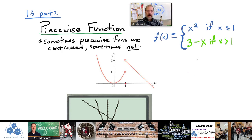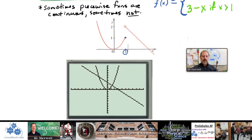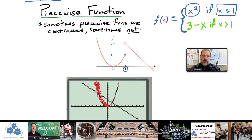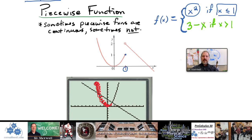Let me refresh your memory. x² is what the graph looks like on the part of the domain when x is less than or equal to 1. At x = 1 there's a filled-in dot, and everywhere to the left it looks like y = x². On the graphing calculator you can see y = x² with its vertex at zero. The specified domain is just less than or equal to 1, so only that portion — the red part — is graphed.